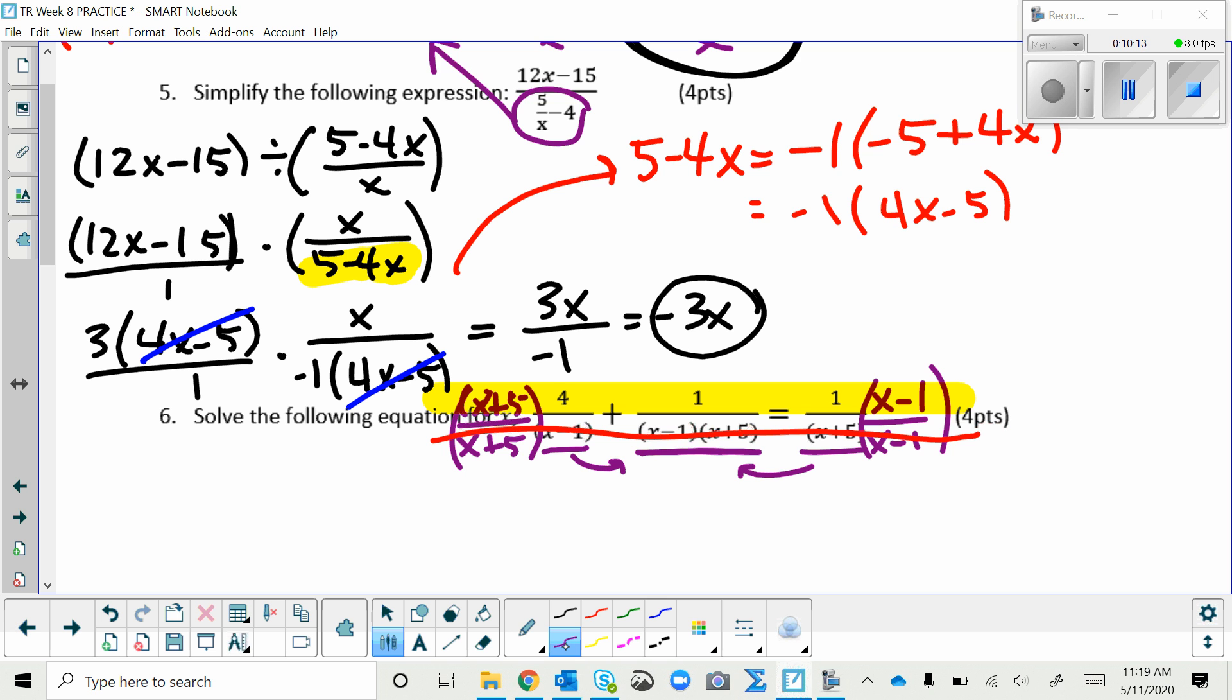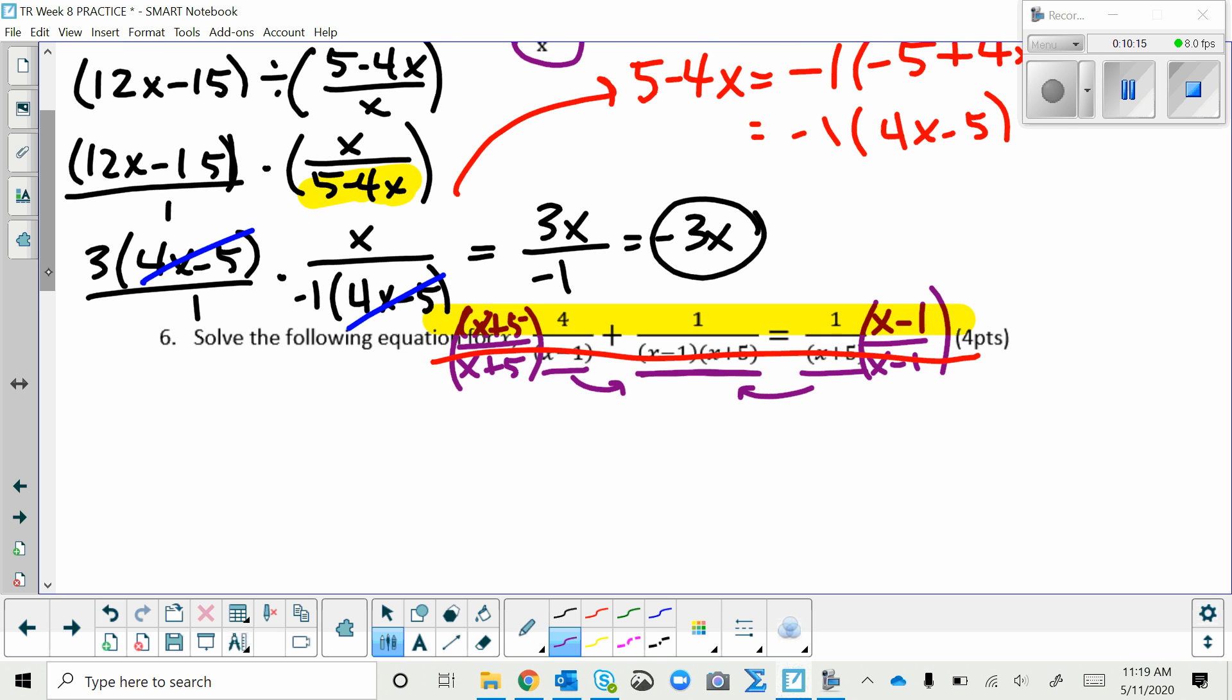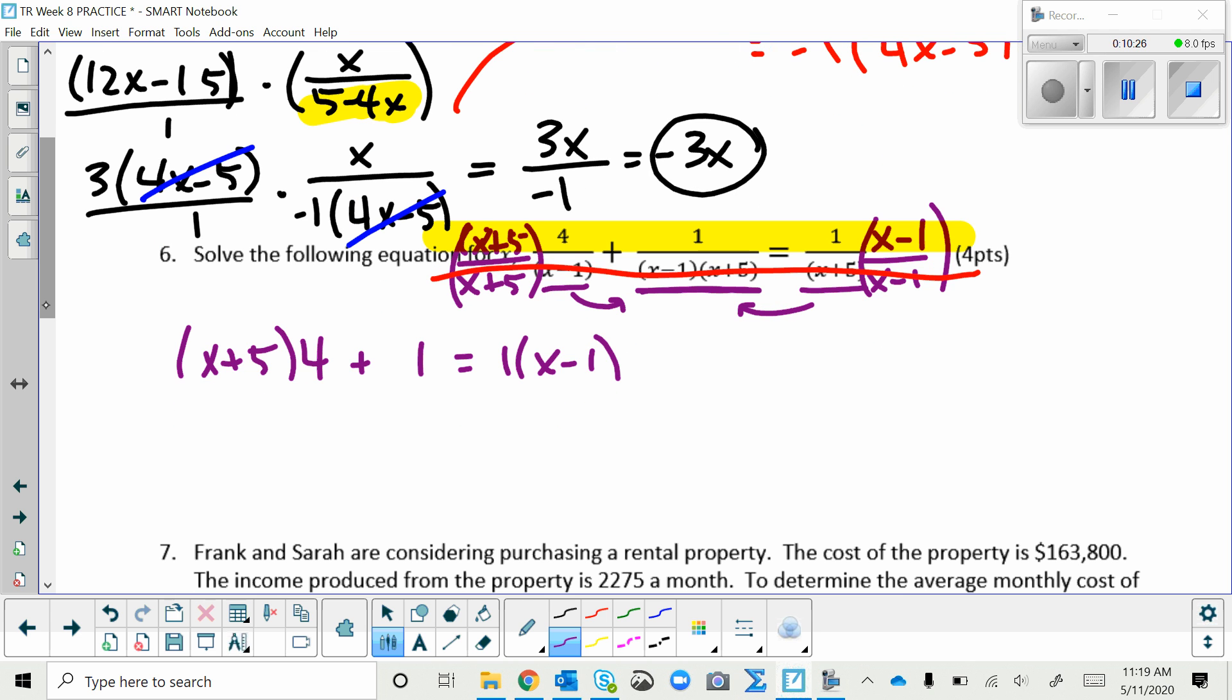And do the math only on the numerators. So here's what the numerators look like. I've got X plus 5 times 4 and then plus 1 equals 1 times X minus 1. All right, so distribute this 4. Distribute this 4. Distribute this 1, which doesn't really change anything. Combine those.